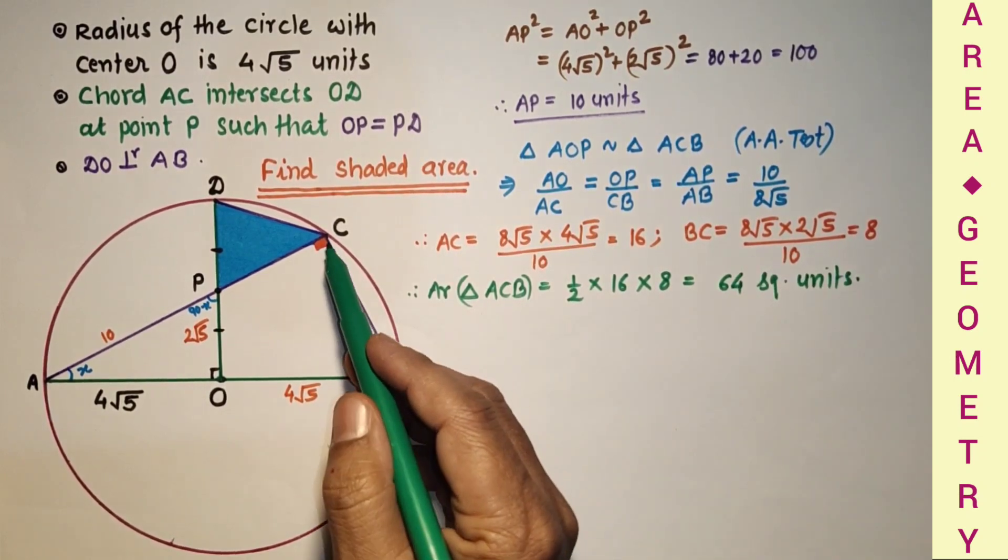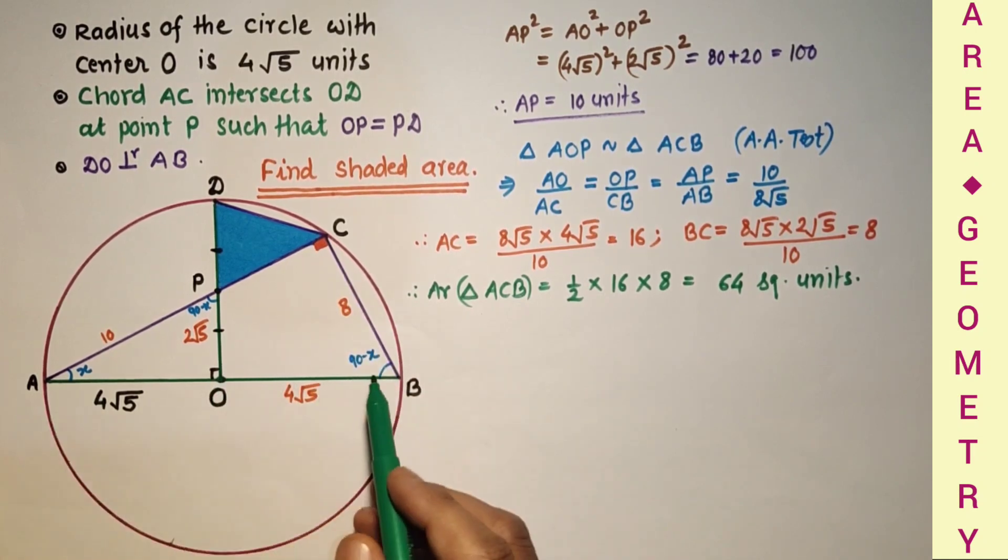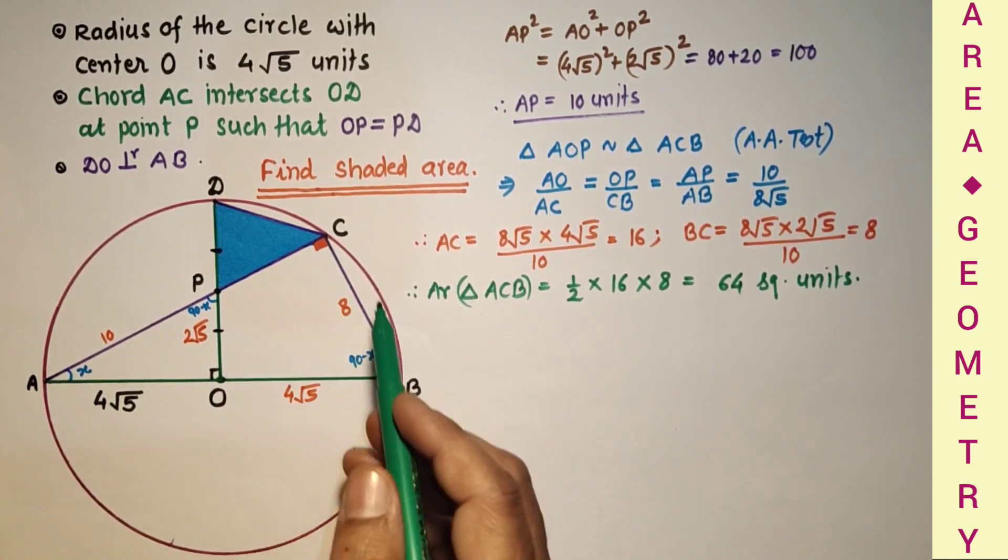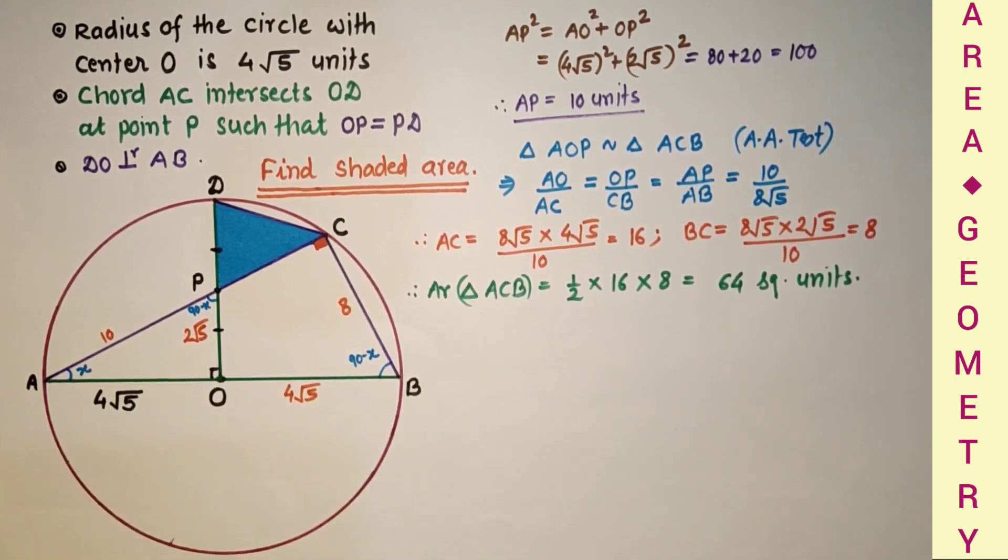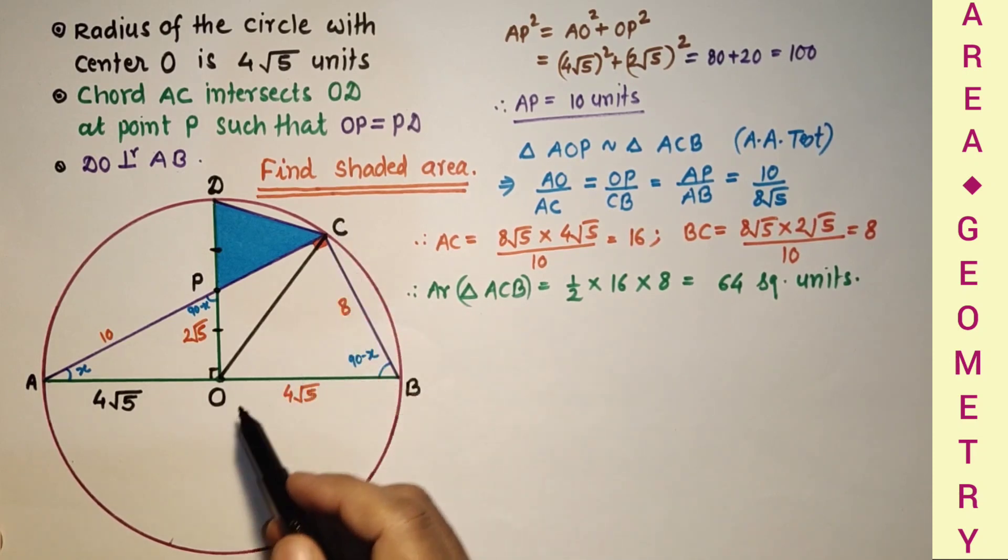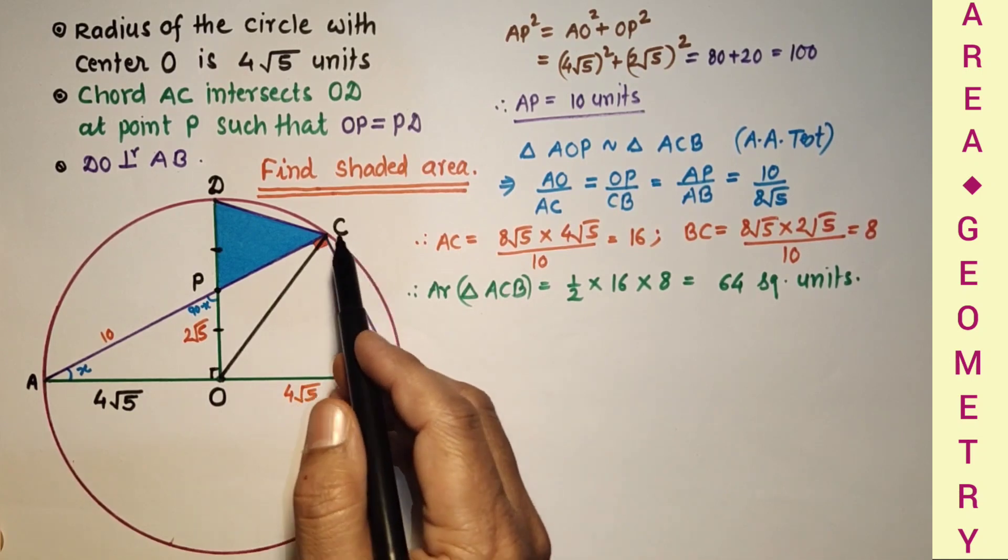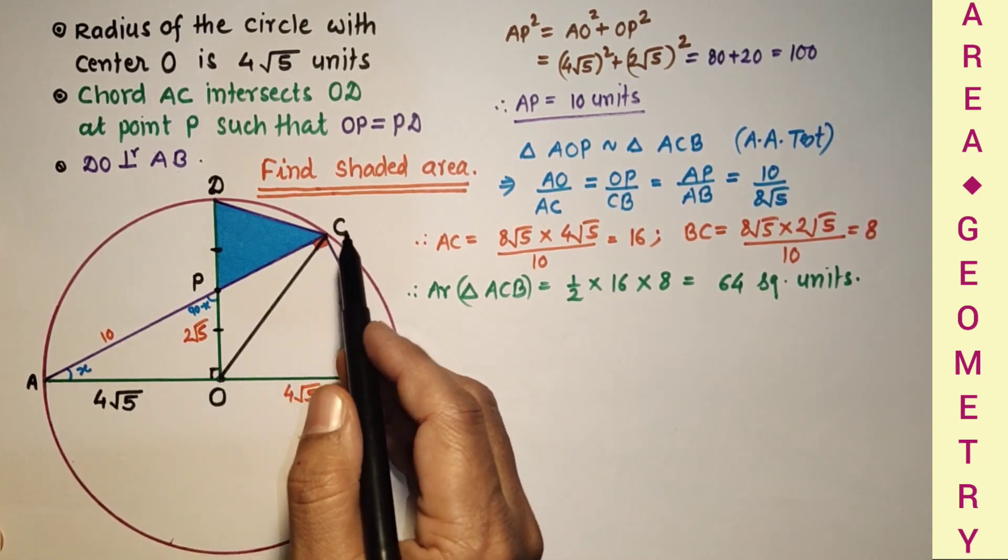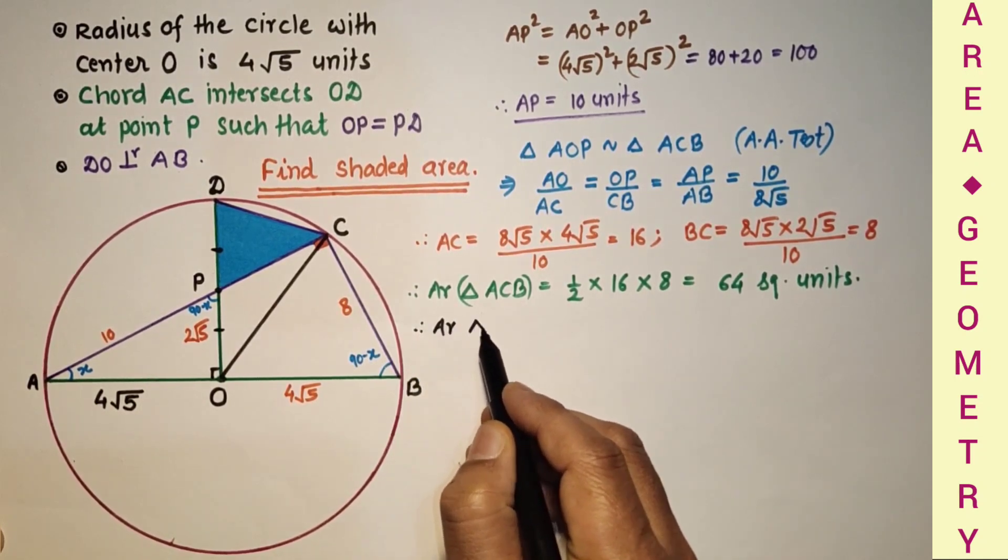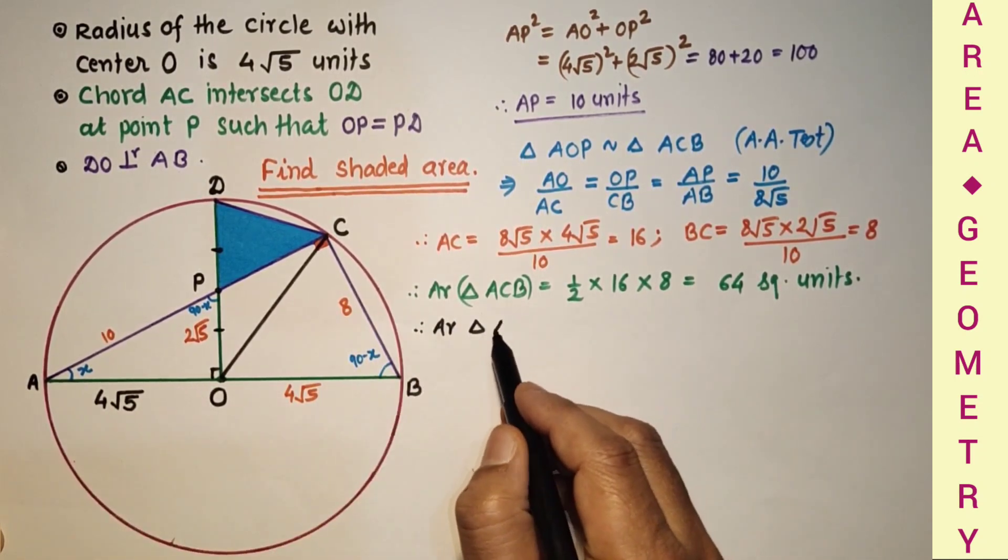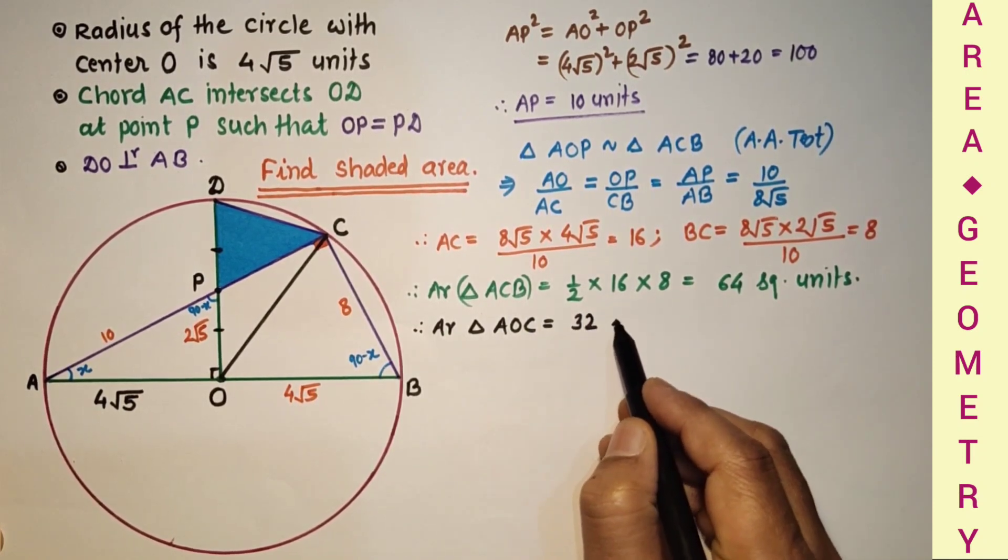If we join this CO, this CO will be median, because O is the midpoint of AB. And median divides a triangle into 2 parts having equal area. So CO is median and divides this triangle into 2 equal parts. Area of triangle COB is equal to area of triangle COB. And therefore area of triangle AOC is equal to half of 64, and that is 32 square units.